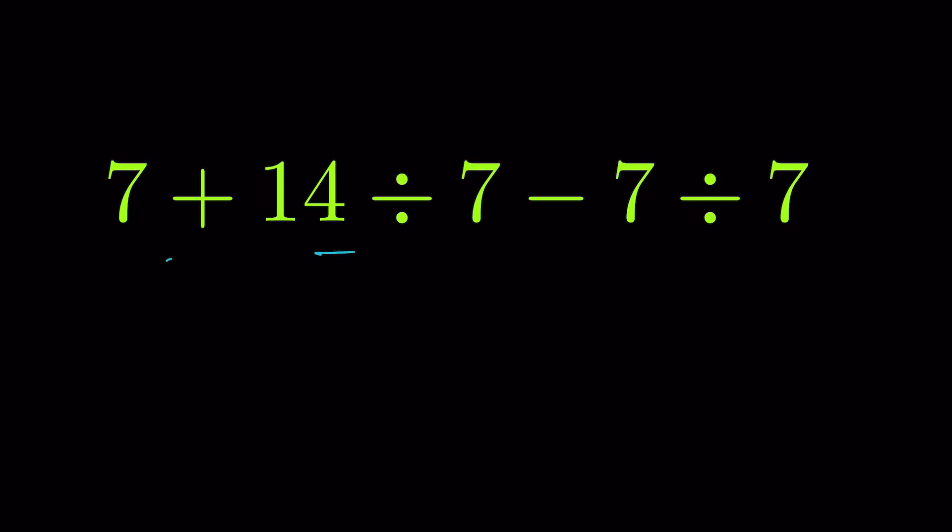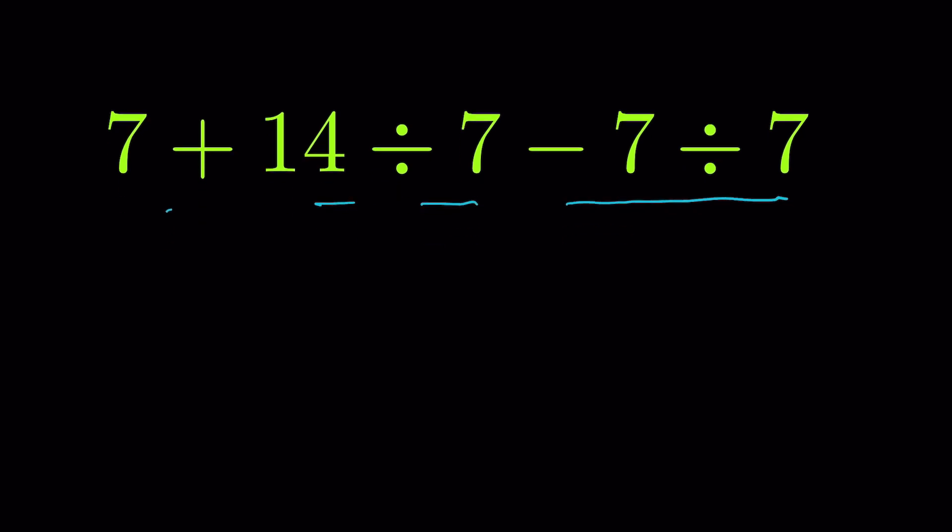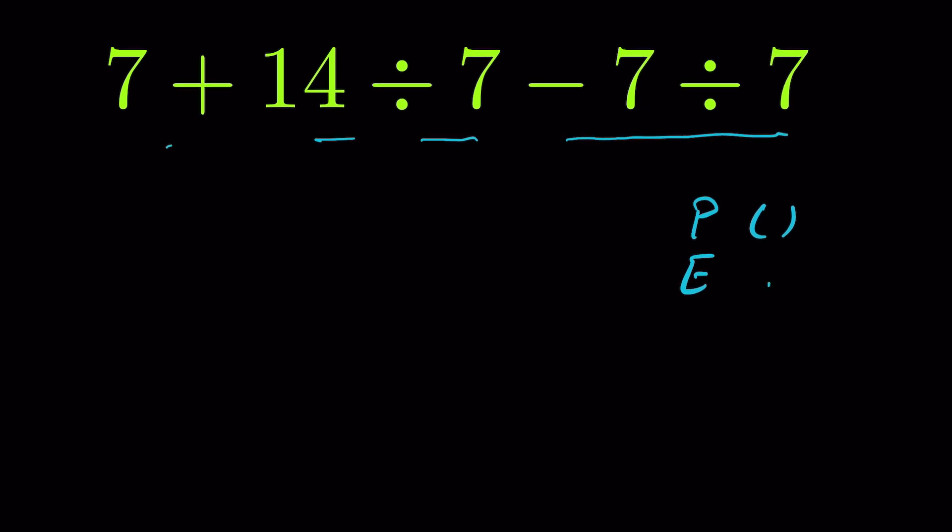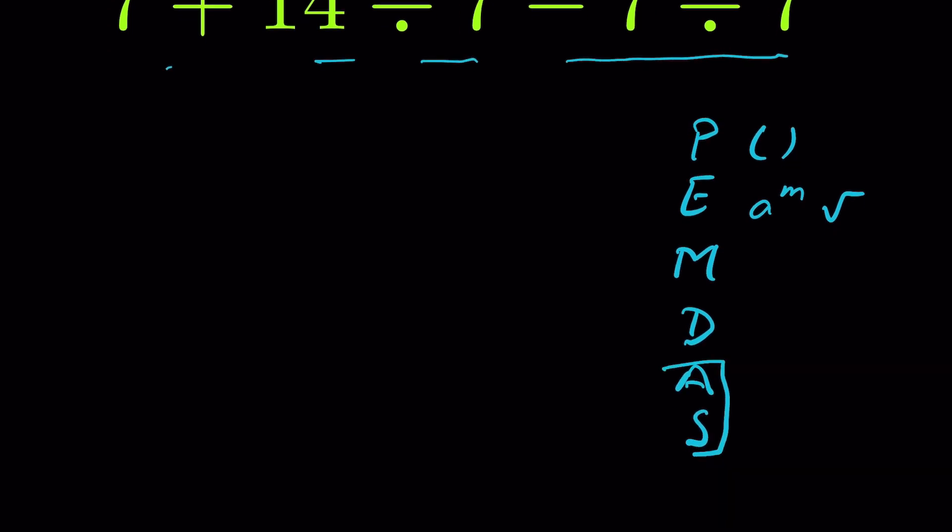7 plus 14 divided by 7 minus 7 divided by 7 - how to solve this? As per the order of operations, first we do parenthesis, then exponents (orders, indices, roots), then comes multiplication, division, addition, subtraction. So you see, addition and subtraction